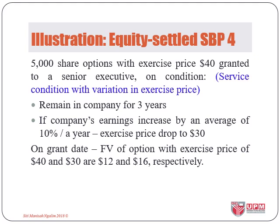In the fourth illustration, 5,000 share options with exercise price of $40 were granted to a senior executive with a service condition: he must remain in the company for three years. If earnings increase by an average of 10% a year over the three-year vesting period, the exercise price will be reduced to $30 — an incentive, but not a performance target. At grant date, the fair value of the option with exercise price of $40 was $12 and with exercise price of $30 was $16.